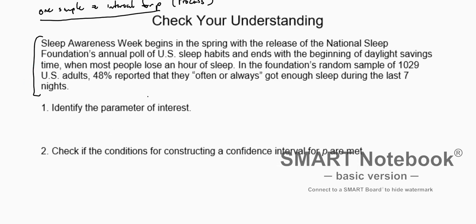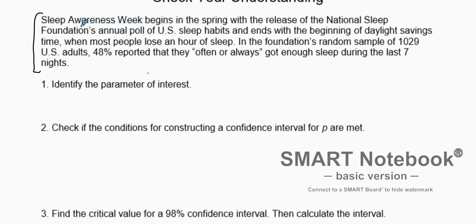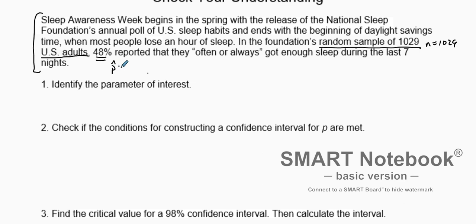Sleep Awareness Week begins in the spring with the release of the National Sleep Foundation's annual poll of US sleep habits, and ends with the beginning of daylight saving time when most people lose an hour of sleep. In the foundation's random sample, n equals 1029 US adults. 48 percent reported they often or always got enough sleep during the last seven days.